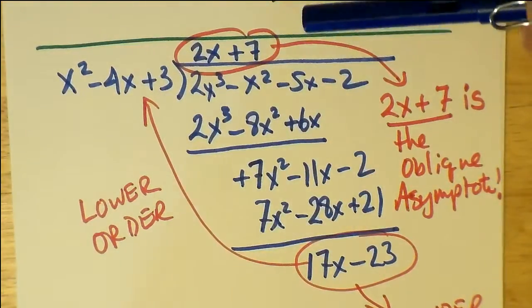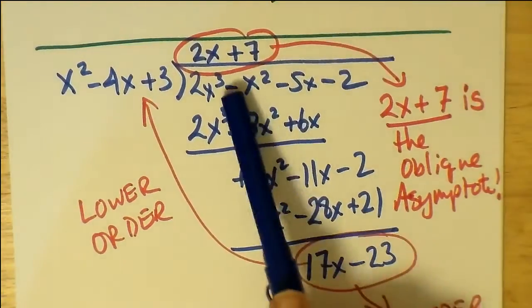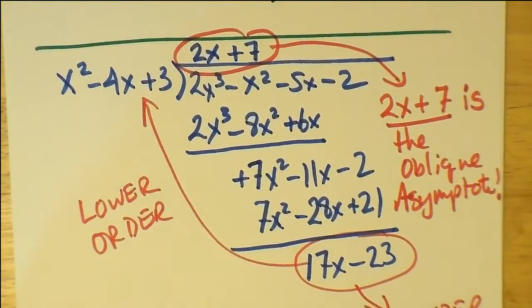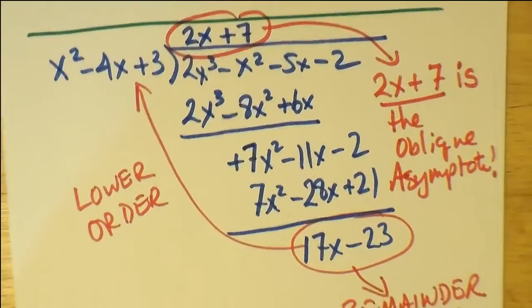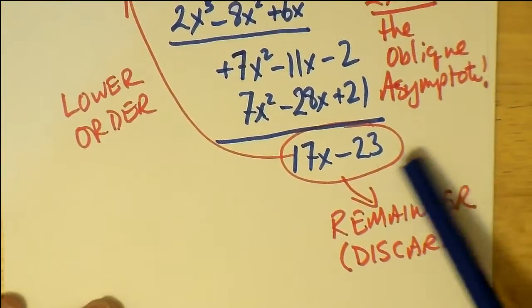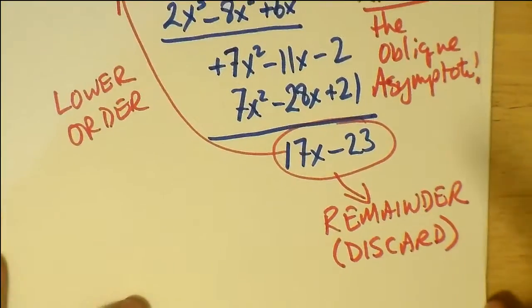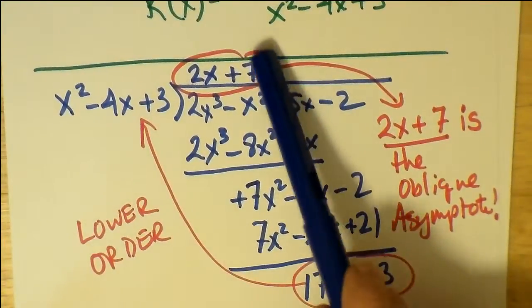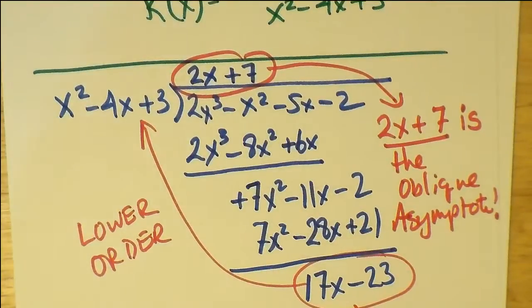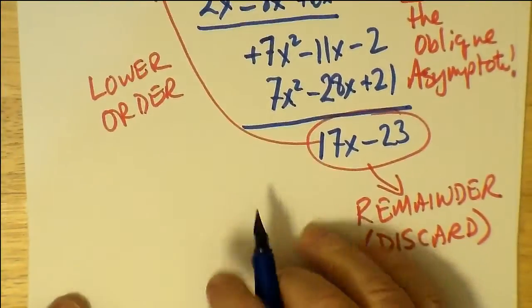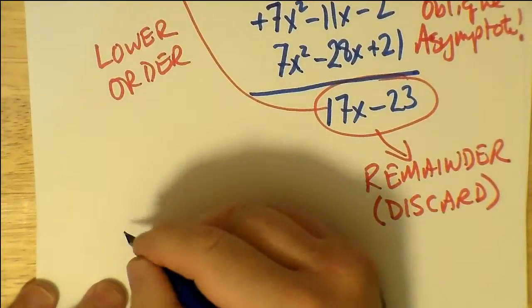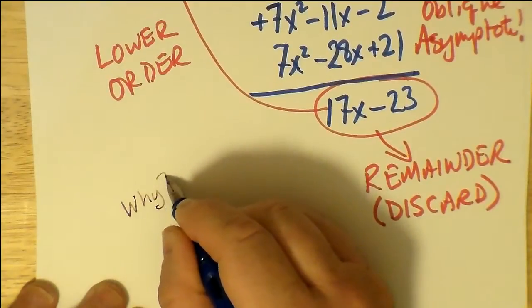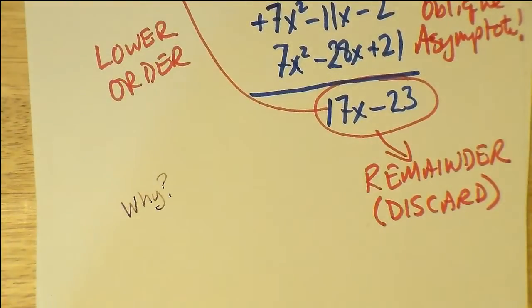Well, if you recall from the last lesson, the last video, 2x plus 7 is the oblique asymptote for that synthetic, or that long division that we did. We said that we discarded the remainder because the remainder was of lower order than x squared minus 4x plus 3, which we were using for division. This video will try to answer why. Why is it that we discard the remainder even though it contains an x term inside it?